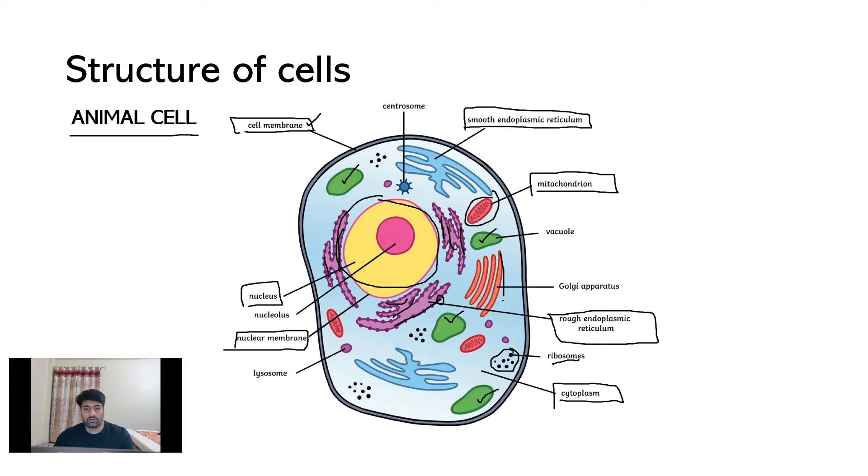Alongside vacuole, we can observe these parallel sac-shaped structures, which are also called as Golgi apparatus or Golgi body, named on their discoverer, Camillo Golgi. We can see another organelle which is specific to or characteristic of the animal cell, called as lysosome.